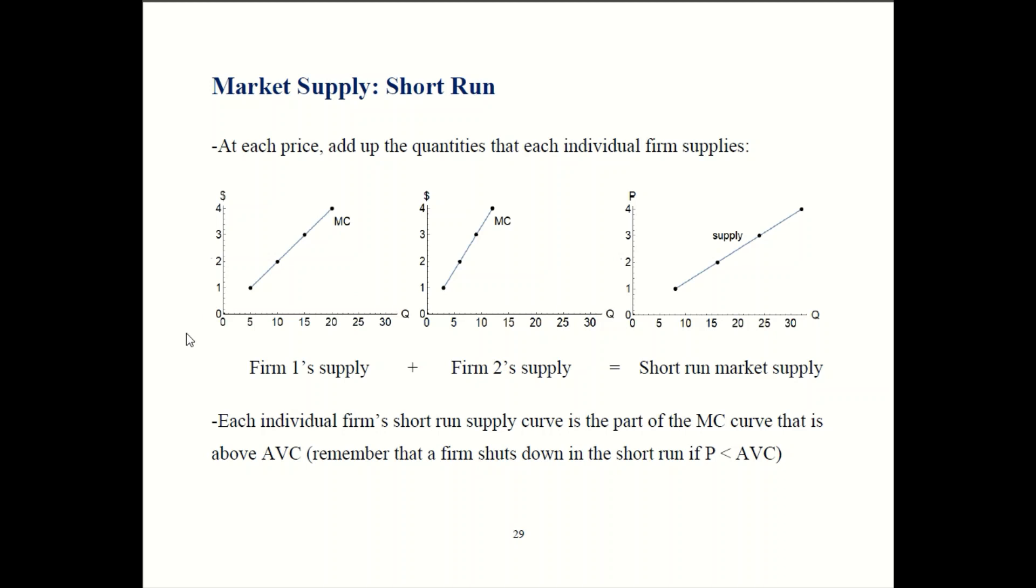Now where things are a bit different is that if price falls below one, you can see that both firms are shutting down here. If both firms shut down, that means that market supply is going to be zero. So that's why our graph stops at a price of one. We're in the short run here, so that means that obeys our short run rule for shutting down. That rule was price less than average variable cost. If you need a quick refresher on that, go back to one of our earlier episodes where we talk about that in a bit more depth.